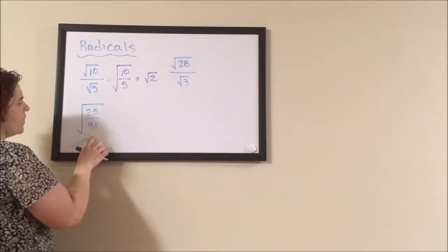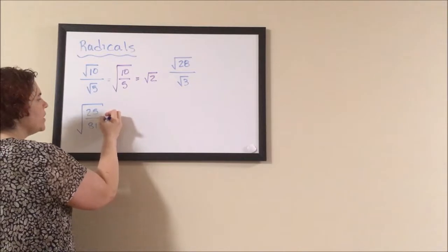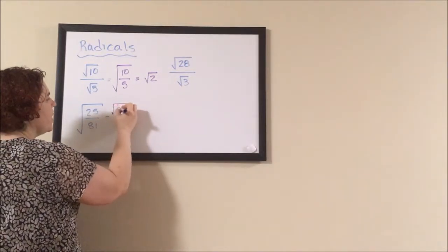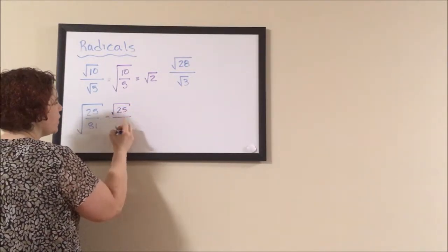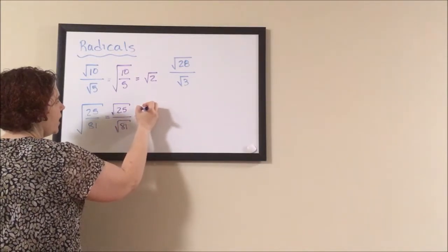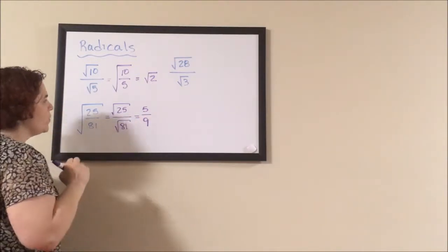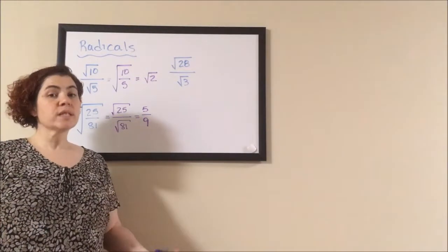On the flip side, if you have a fraction written under one radical, you can split it up into the square root of 25 divided by the square root of 81. The square root of 25 is 5. The square root of 81 is 9. And we can reduce numerator and denominator separately.